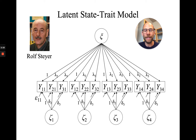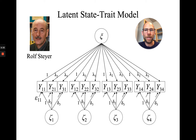One more thing to point out is that this model is very similar to a bifactor model. You may know bifactor models from cross-sectional analyses where you extract a general factor and specific factors. This is a very similar structure: the general factor is the trait, and the specific factors represent the situation and person-by-situation interaction effects. In addition, you also have random measurement error in this model.